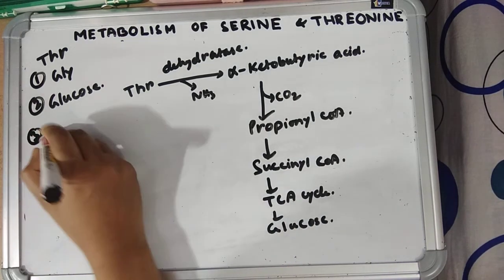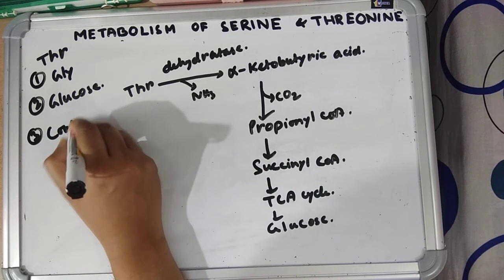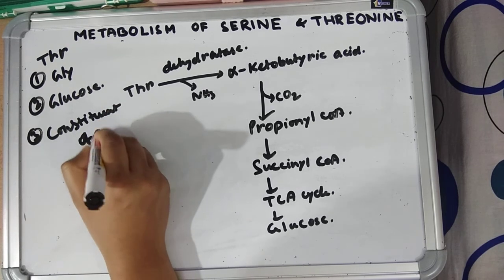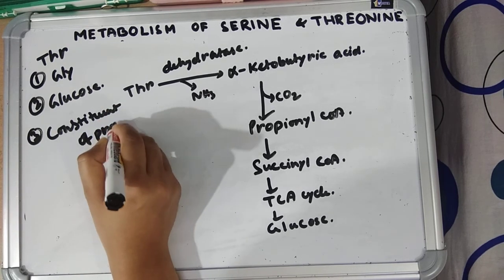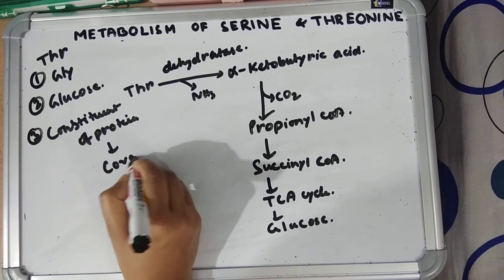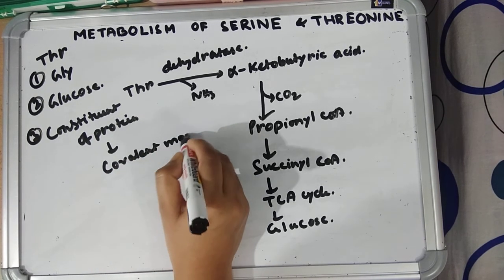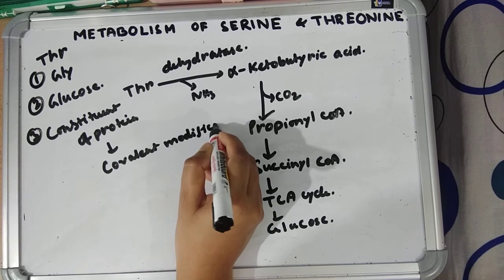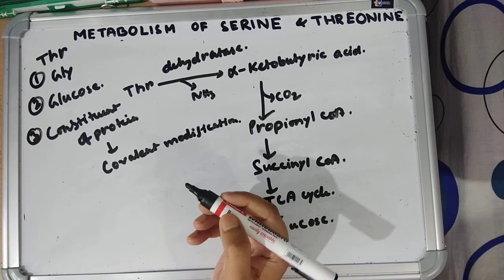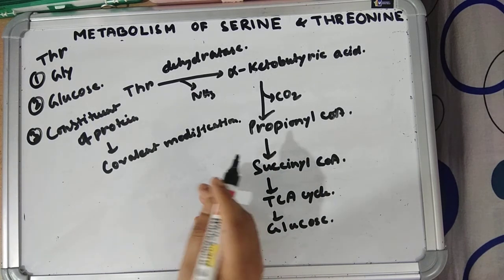Number three: threonine is also an important constituent of proteins, and like serine, it helps in the covalent modification — that is, phosphorylation of proteins — via its hydroxyl group. This concludes the topic of serine and threonine metabolism. Thank you.